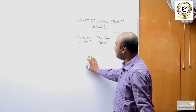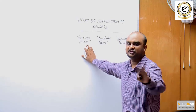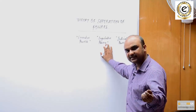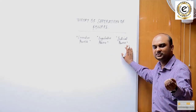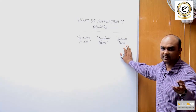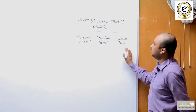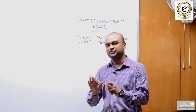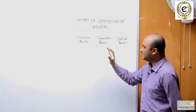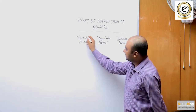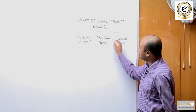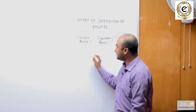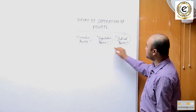Executive powers simply means the powers which are exercised by the officials of the government. Legislative powers means the power exercised by the parliament. Judicial powers obviously are the powers exercised by the Supreme Court, High Court and other courts. This theory of separation of powers was given by the French philosopher Montesquieu, who says that all powers of the government must not be concentrated in one organ but should be separated into different organs.